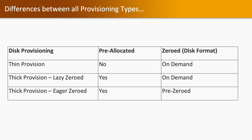Looking at the differences between all provisioning types: in thin provisioning, pre-allocation is no and zeroed is on demand. In thick provisioning lazy zeroed, pre-allocation is yes and zeroed is on demand. In thick provisioning eager zeroed, pre-allocation is yes and zeroed is also yes.